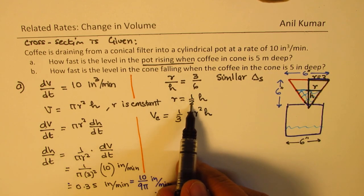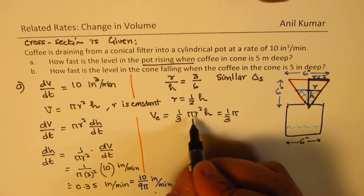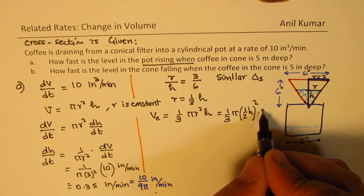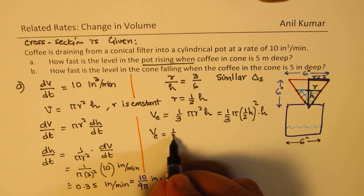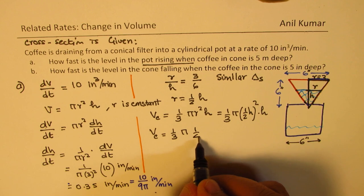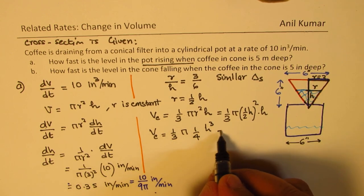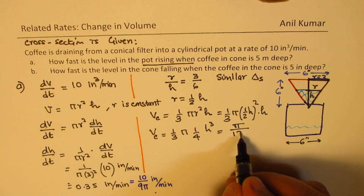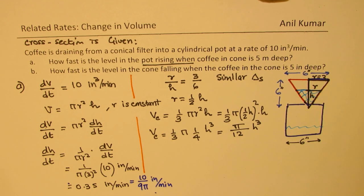Volume of a cone is 1/3 πr²h. Since we know that r is half of h, we can change this as 1/3 π times (h/2)² times h. So the volume of the cone can now be written as 1/3 π times 1/4 h² times h gives us h³. So which is π/12 h³.